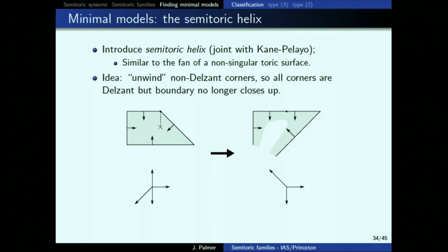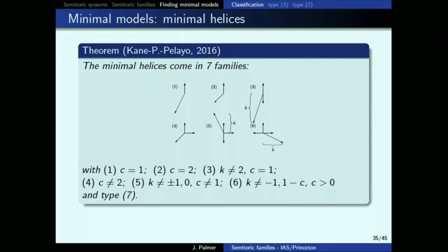Then you get a result: you come up with seven different families which are the ones that do not admit blowdowns. Once you unwind it, checking if something admits a blowdown is relatively easy. I've drawn six of the seven families; the seventh is more complicated with more vectors, but is also more or less explicit.